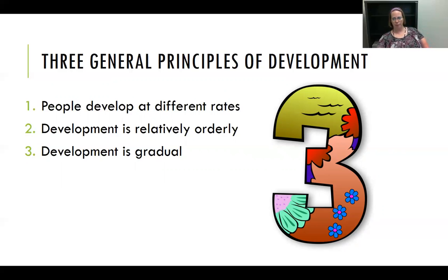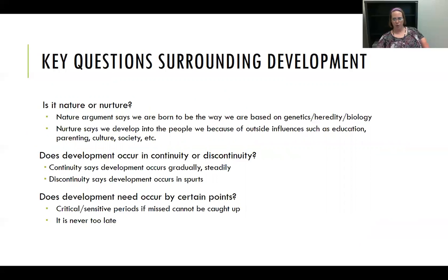Despite the agreed-upon principles, there are also bits of controversy still associated with development. The three central debates are: first, is it nature or nurture? The nature argument says we are born to be the way we are based on genetics, heredity, and biology. Nurture says we develop into the people we are because of outside influences such as education, parenting, culture, and society. Second, does development occur in continuity or discontinuity? Continuity says development occurs gradually and steadily; discontinuity says development occurs in spurts. Third, does development need to occur by certain points? Are there critical or sensitive periods that if missed cannot be caught up, or is it never too late?